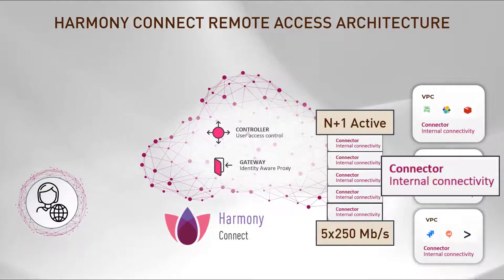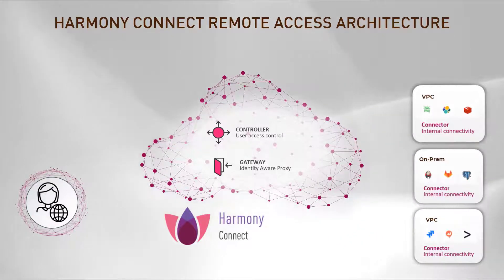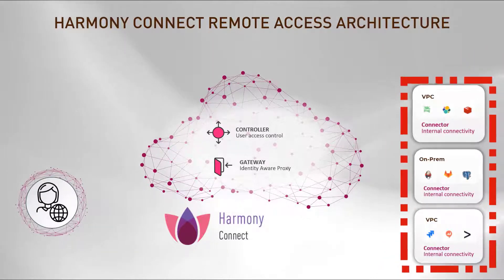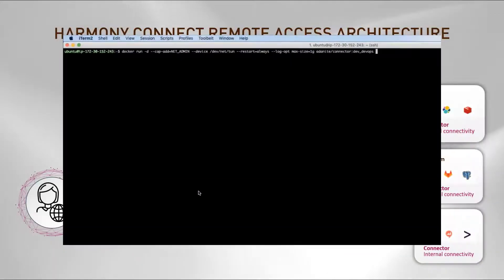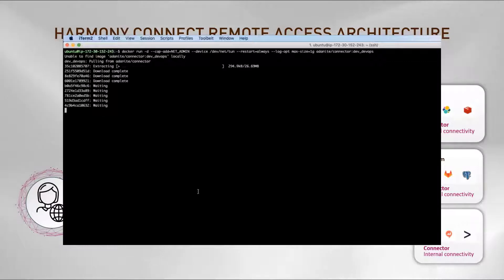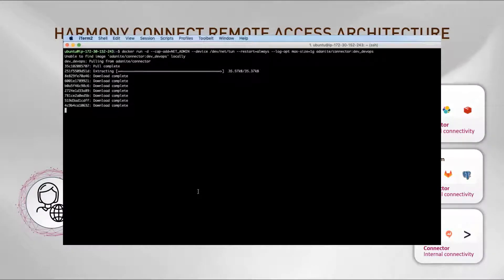Each connector bandwidth performance is 250 megabits per second and can scale up to 5 connectors per site. Using reverse tunneling, Harmony Connect provides access to data centers that may be fully closed to direct access from external sources. The connector is not an agent — there is no need to deploy it on any one of your servers. The connector is a dedicated docker machine for each data center.